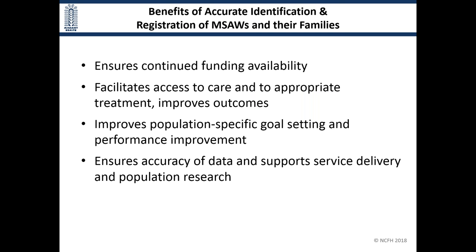The benefits of accurate identification include ensuring continued funding and availability for farm workers — it is not an insurance program, though many people think it is. Accurate identification and registration facilitates access to care for appropriate people and improves outcomes. It's important for providers to know what kind of work their patients are doing. It improves population-specific goal setting and performance improvement, and by ensuring accuracy of data, it supports service delivery and population research.